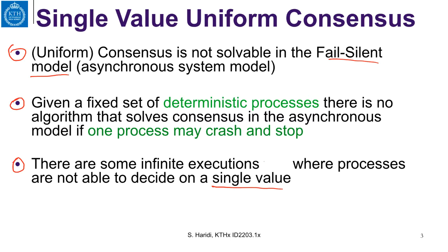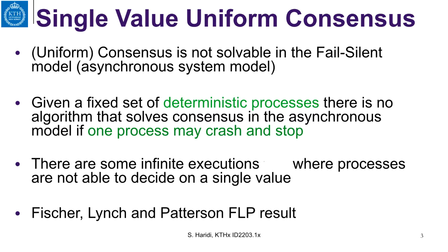The intuition — and that is not the proof — is that we have a problem: it is not possible to distinguish a slow process from a process that has crashed in the fail-silent model. So at certain states in executions, it is not possible to actually decide, because you don't know if some process is still alive but has not yet communicated its decision. This result, called the impossibility result of consensus, was published in the 1980s by Fisher, Lynch, and Paterson, and is known as the FLP impossibility result.